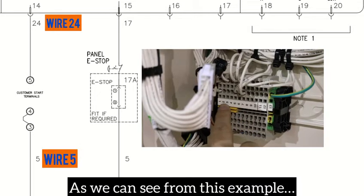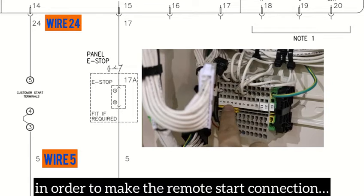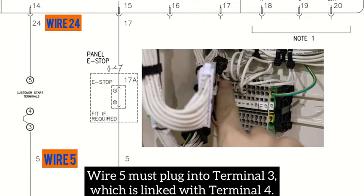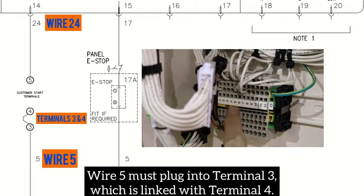As we can see from this example, in order to make the remote start connection, wire 5 must plug into terminal 3, which is linked with terminal 4.